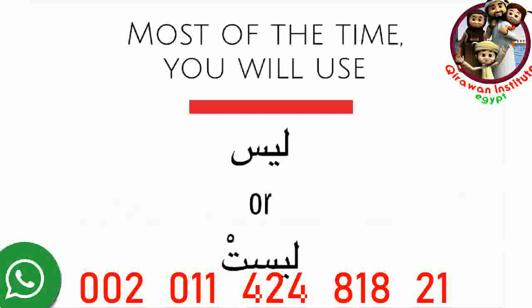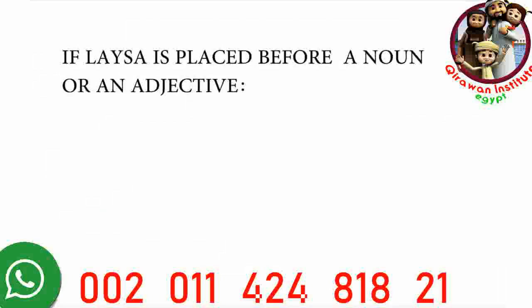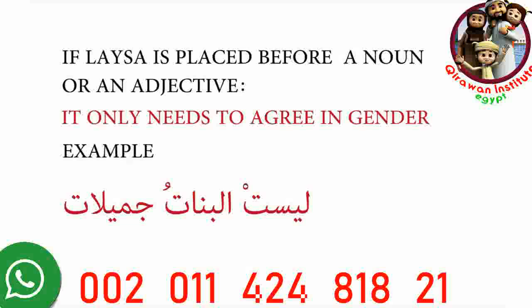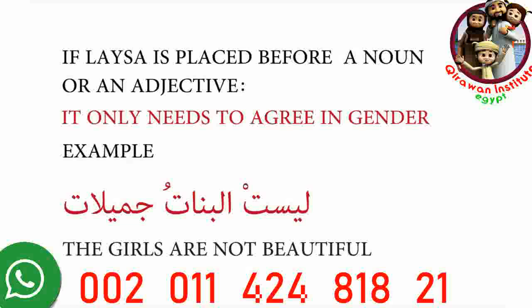Now you're going to find out why. If leysa is placed before a noun or an adjective, it only needs to agree in gender. For example: leysit al-betu jami latin — 'the girls are not beautiful.' Here, the subject, al-muktedda, al-betu, is feminine and plural. But when we choose our form of leysa, we don't have to use the feminine plural form. We use leysit, the feminine singular form, because we're adding it before the subject of the sentence. Arabic dialects will often use this pattern because it simplifies everything — you'll only have to remember two forms, leysa and leysit, instead of all the other forms of the verb.